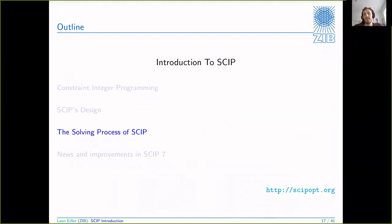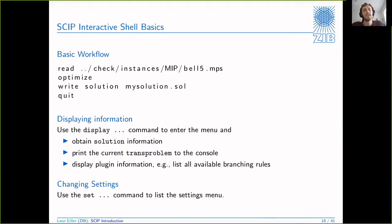Now let's look at how you actually run SCIP and what the different steps are when you solve a problem. The basic workflow if you use the interactive shell is: you read in a problem - for example an MPS file with the 'read' command - then you type 'optimize', which might take a while, and you will hopefully get an optimal solution that you can write out with the 'write' command. You can also display more information about the solution, display statistics, or print the transformed problem - which is the problem SCIP is actually working on, possibly reduced by pre-solving steps.